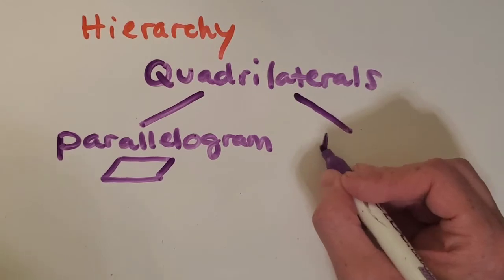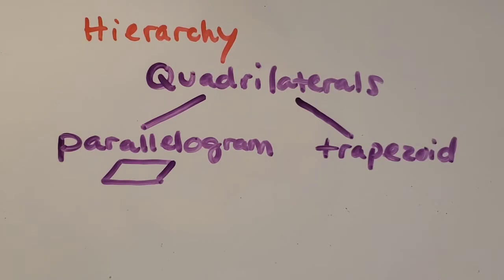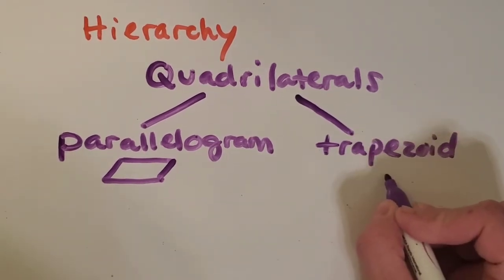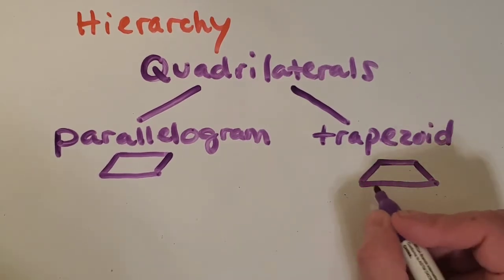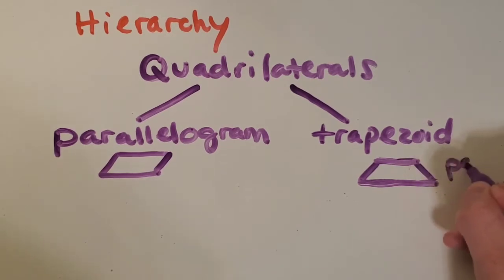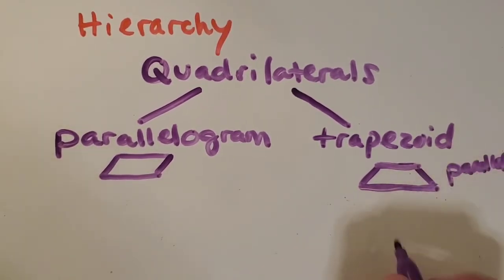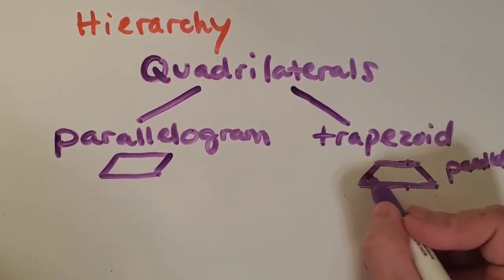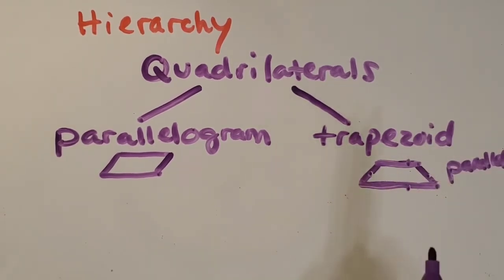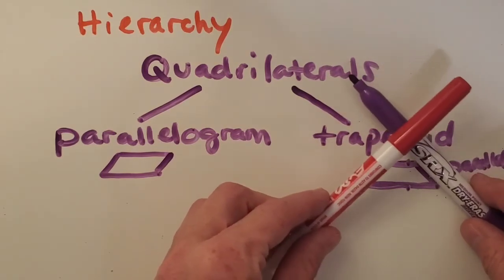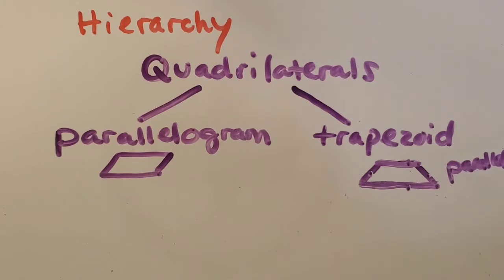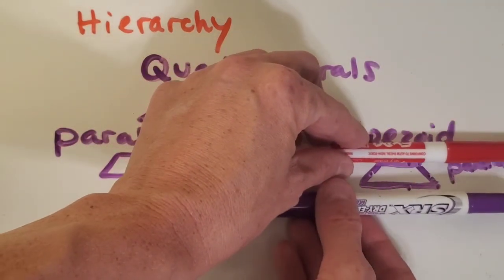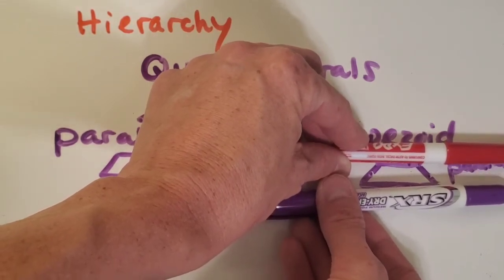There's also a type of shape that has only one pair of parallel sides, and that is called a trapezoid. Those are a little bit different — they have one pair of parallel sides and one pair that is not. A test I like to do to check for parallel is: if you kept drawing those two sides, are they going to cross or intersect? If they would, they're not parallel. But a truly parallel pair, if you kept drawing them forever, they would never touch.